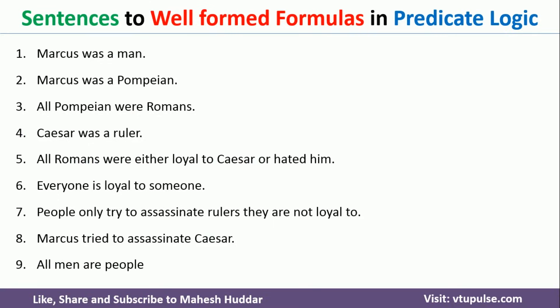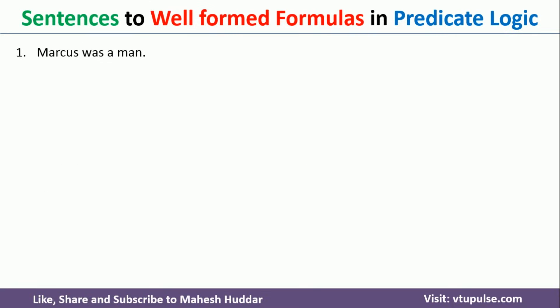I will consider the first example: 'Marcus was a man.' In this case, Marcus is one person and man is a class. Within this particular class, Marcus is one entity. That's the reason you can write this particular fact as man(Marcus) — man is a class and Marcus comes under this particular class.